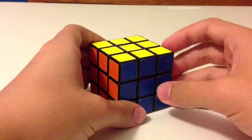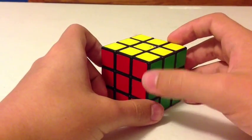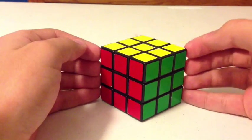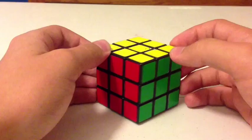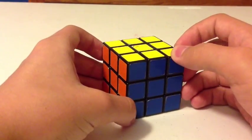Now, if you get a case where all four edges aren't solved, no big deal. Just perform the algorithm a second time and you'll get one solved edge. Then perform the algorithm again like normal.